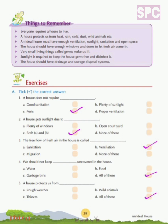Question 3: The free flow of fresh air in the house is called — sanitation, ventilation, migration, or none of these. The free flow of fresh air in the house is called ventilation. So we will tick option B.